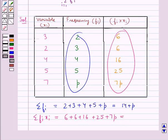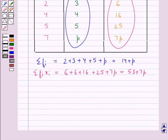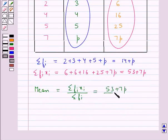Now mean is equal to summation fi xi upon summation fi, that is equal to 53 plus 7p upon 14 plus p.